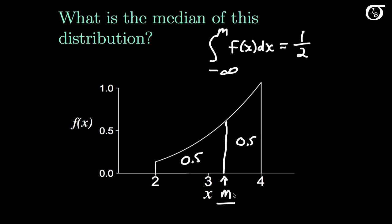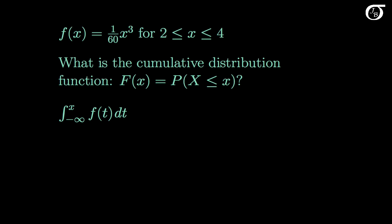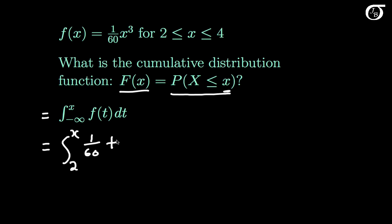Visually, the median we just found is approximately 3.415. Now suppose we want to find the cumulative distribution function for the random variable x. Capital F(x) equals the probability the random variable x takes on a value less than or equal to little x, and this equals the integral from minus infinity to x of f(t) dt — introducing the dummy variable t here because x is one of our limits of integration.